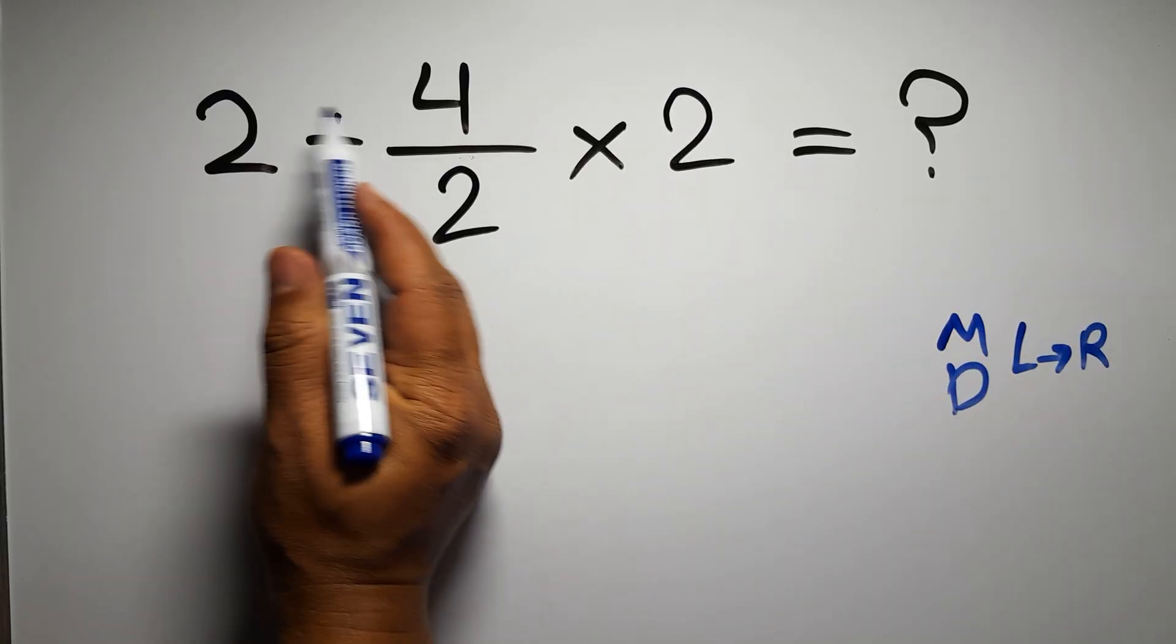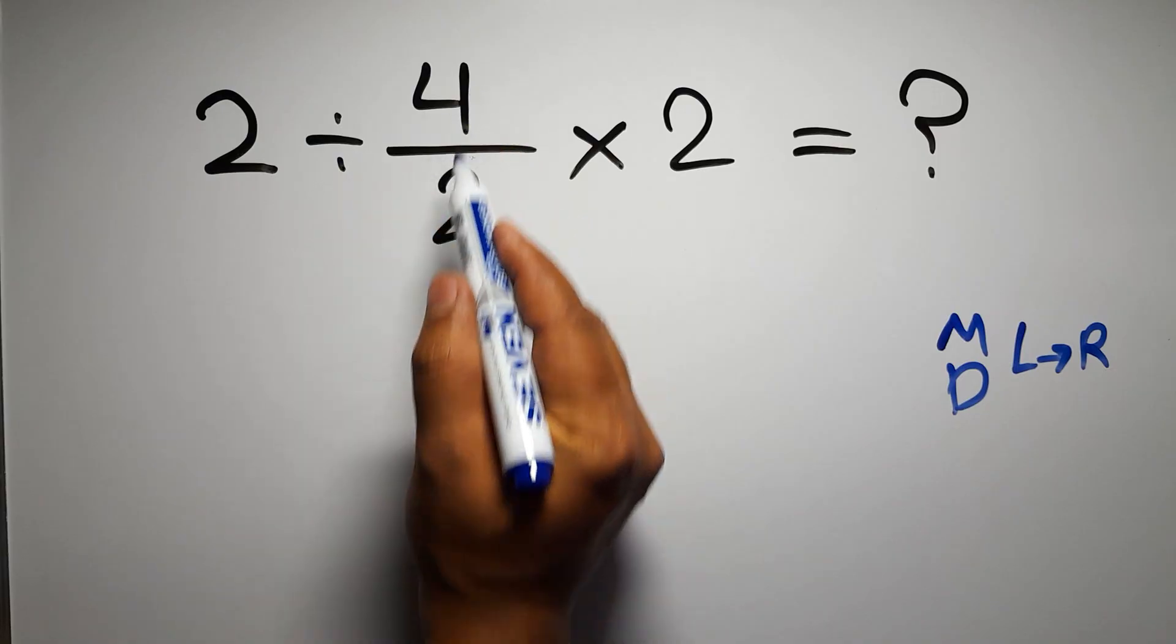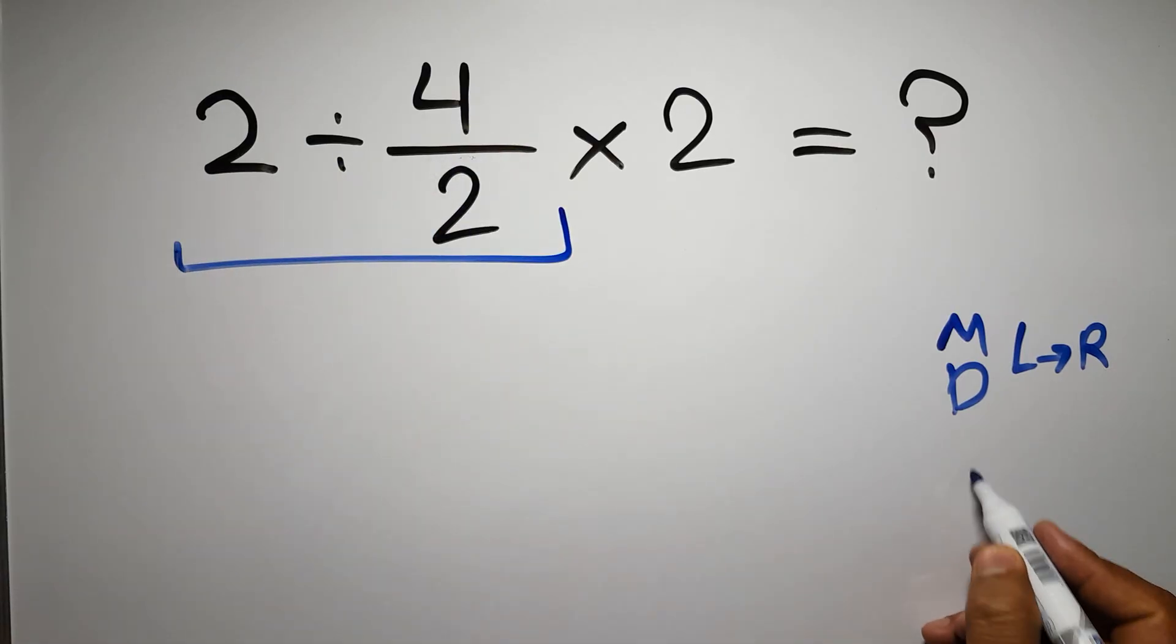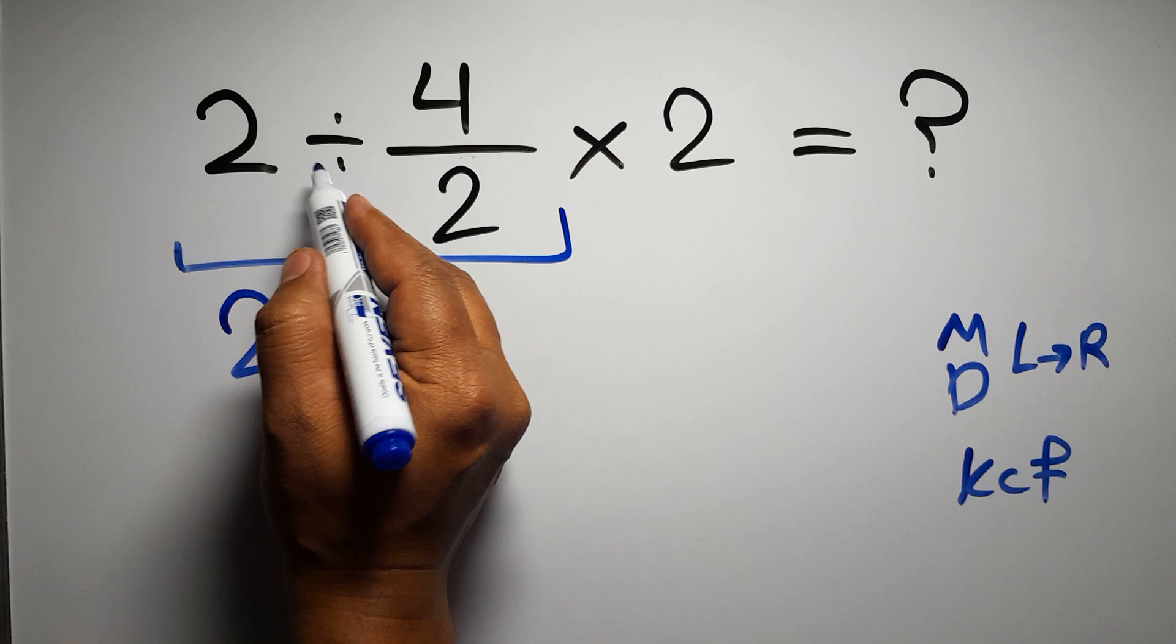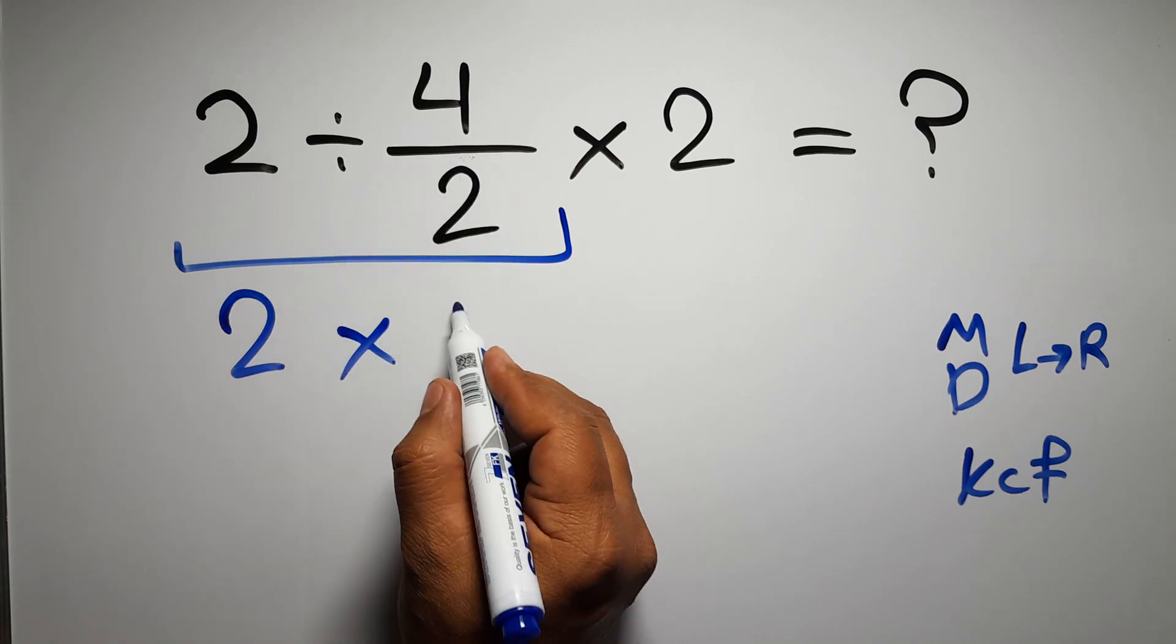So first, this division. 2 divided by 4 over 2. According to the KCF rule, K stands for keep, C stands for change, and F stands for flip. We can write: keep the first fraction, change division to multiplication, and flip the second fraction.